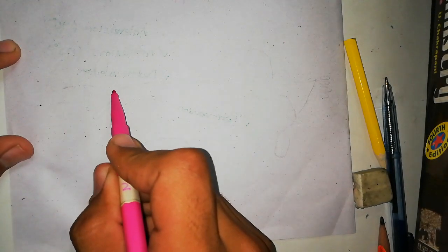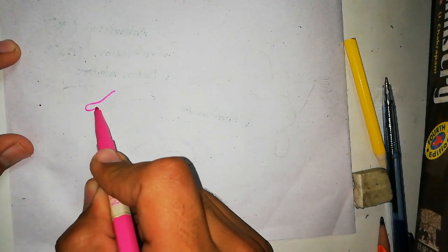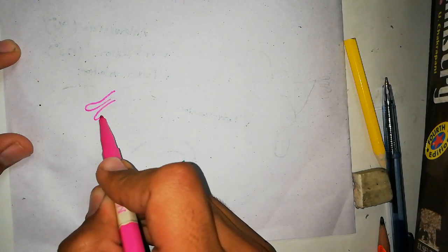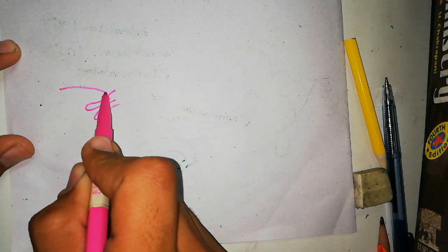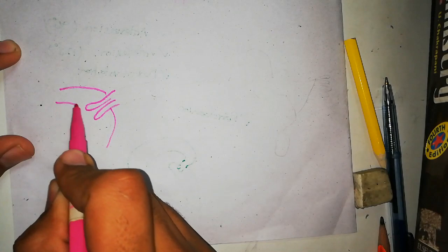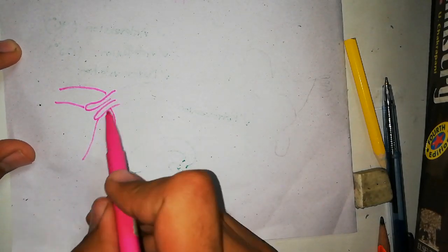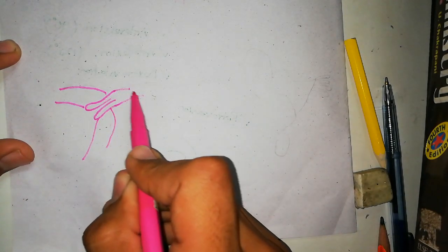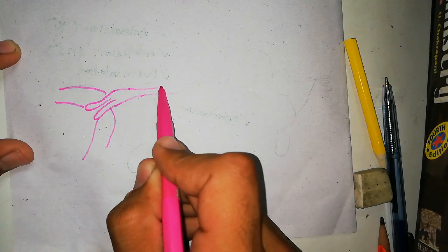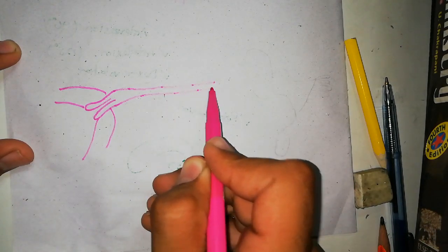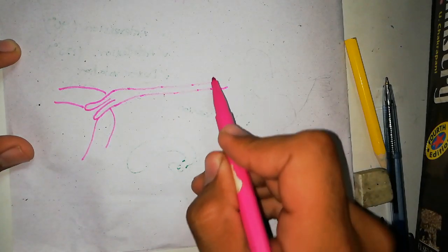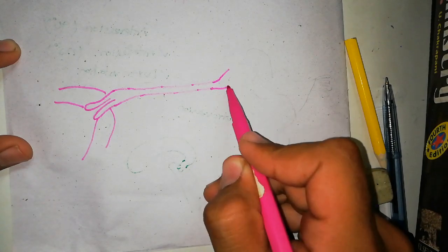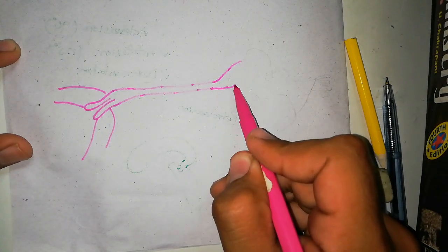If we draw the fallopian tube individually, I would show that this part is in the uterus. This is the uterine wall and this is a part of the fallopian tube inside the uterus. I will not continue the lumen, just show you that the fallopian tube will continue laterally.